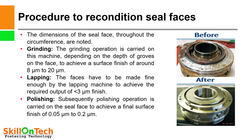Procedure to recondition seal faces: The dimensions of the seal face throughout the circumference are noted. Scratches have to be smoothed out; if there is a wavy pattern, the crests have to be reduced. The face is then fixed on a surface grinding machine for face grinding. The grinding operation is carried out for about 4 to 6 hours depending on the depth of groove, to achieve a surface finish of around 8 to 20 micrometers. Then lapping of the seal faces is done to achieve less than 3 micrometers surface finish. Subsequently, polishing is carried out to achieve a final surface finish of 0.05 to 0.2 micrometers.